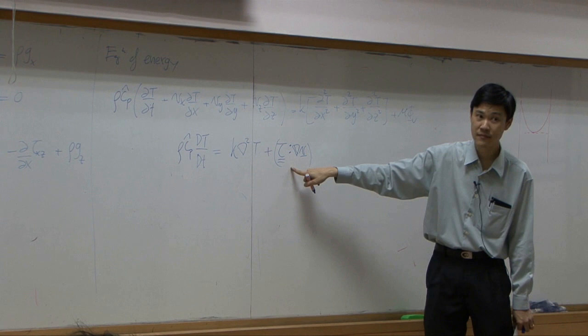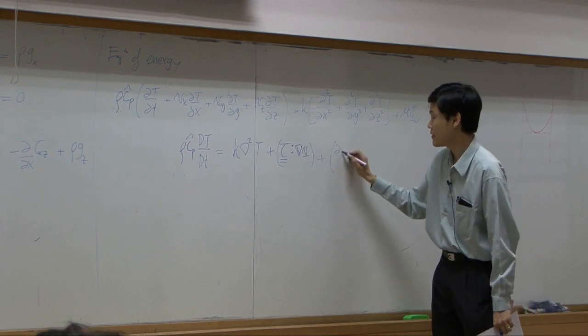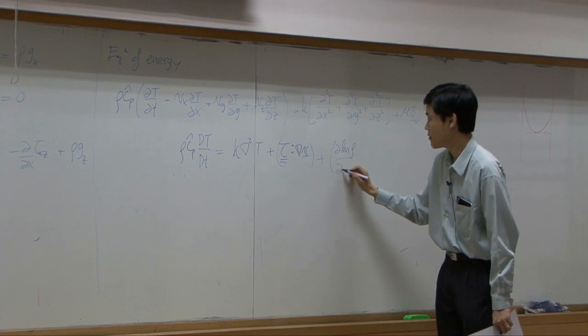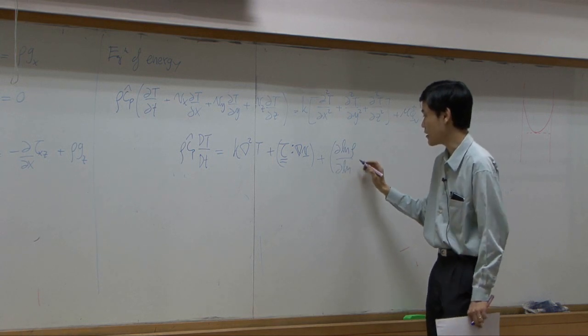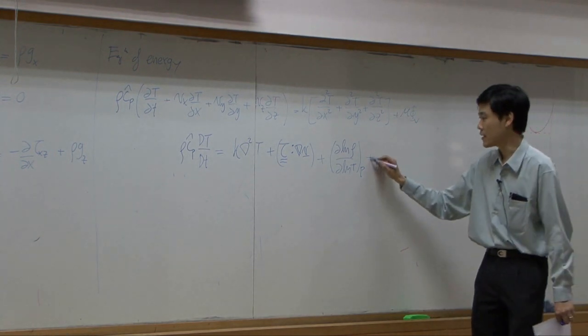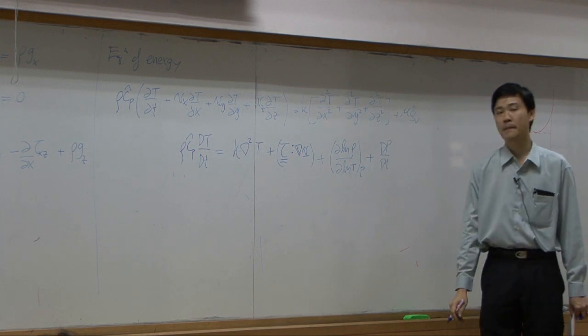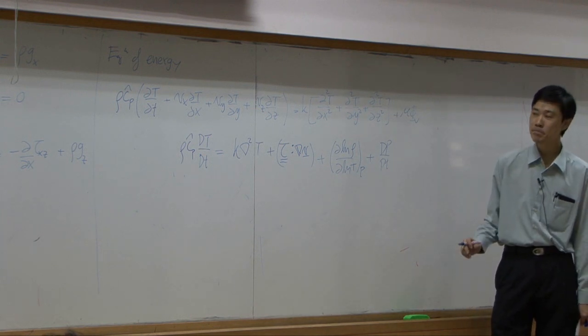And then add D ln rho by D ln T at constant P, plus DP by DT. At steady state, this term becomes zero. And if you assume that density is constant, this term can be dropped.